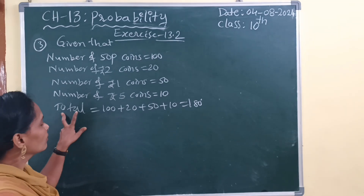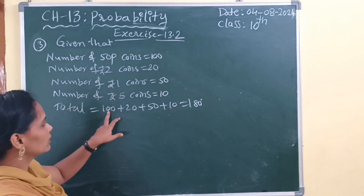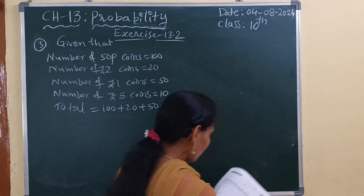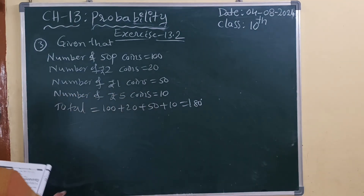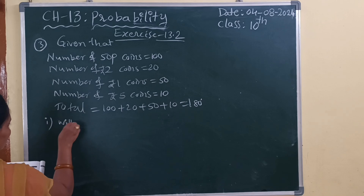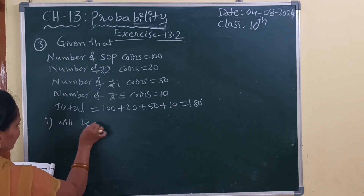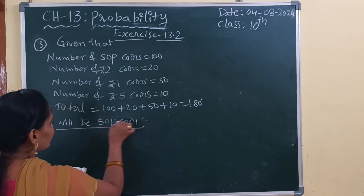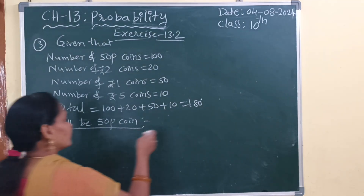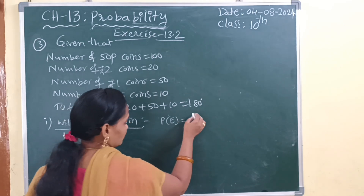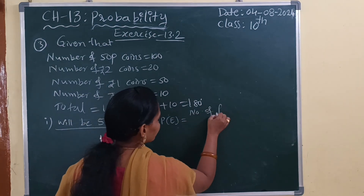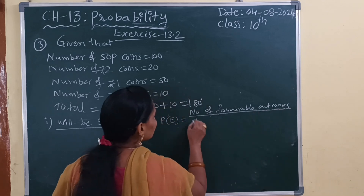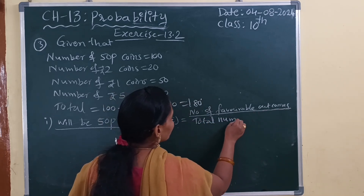So first we can find the total coins. 150 plus 20 plus 50 plus 10 — you will get the total. Now the first condition: the probability of getting a 50 paise coin. We know that the probability formula: probability of an event is equal to number of favorable outcomes divided by total number of outcomes.